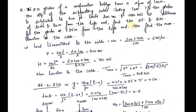This question is similar to the previous one; the only difference is that the external loading has changed. First, we will convert the external loading into equivalent UDL. The equivalent UDL equals the summation of the point loads divided by the total span. So 200 plus 400 equals 600, divided by the span of 100, giving WE equal to 6 kilonewtons per meter.